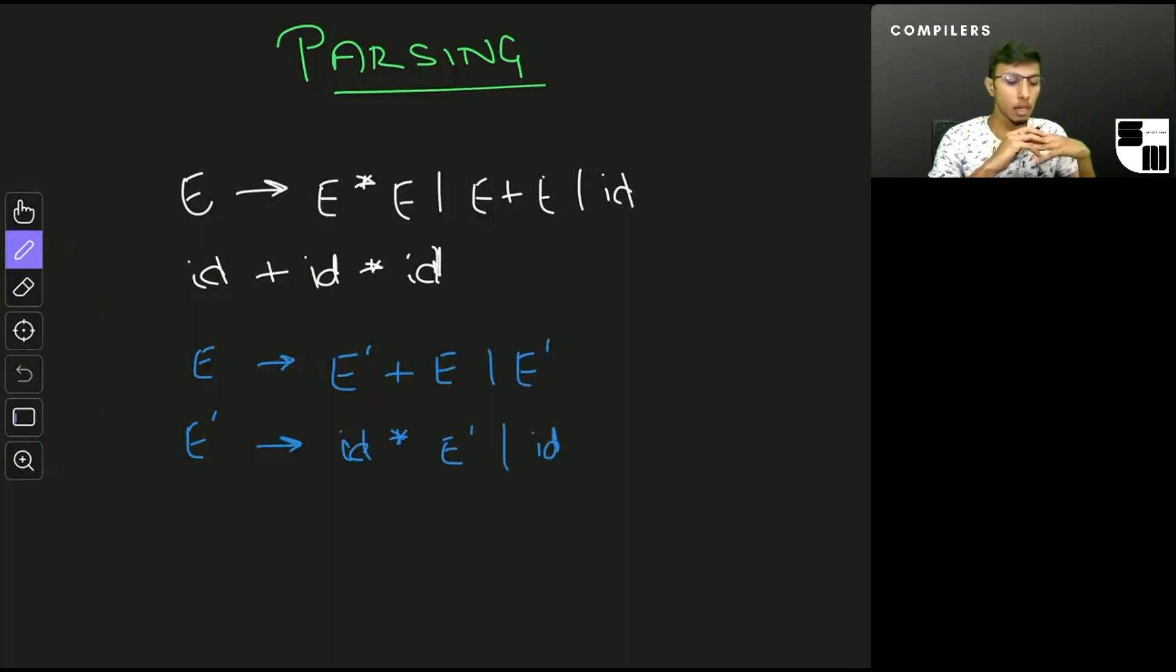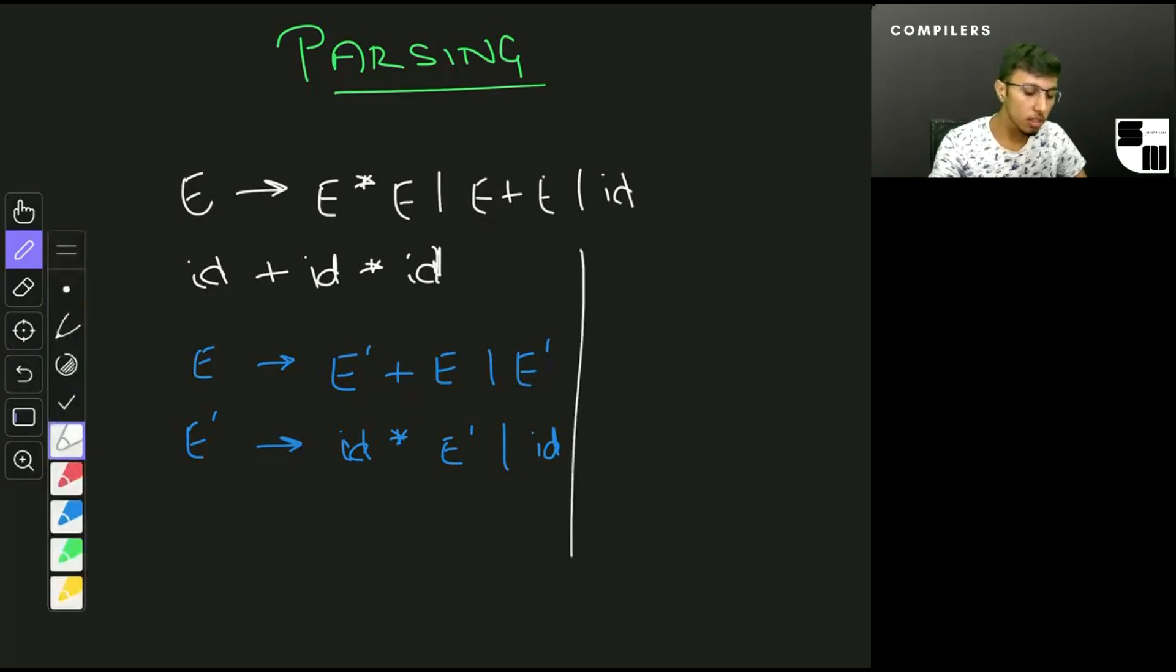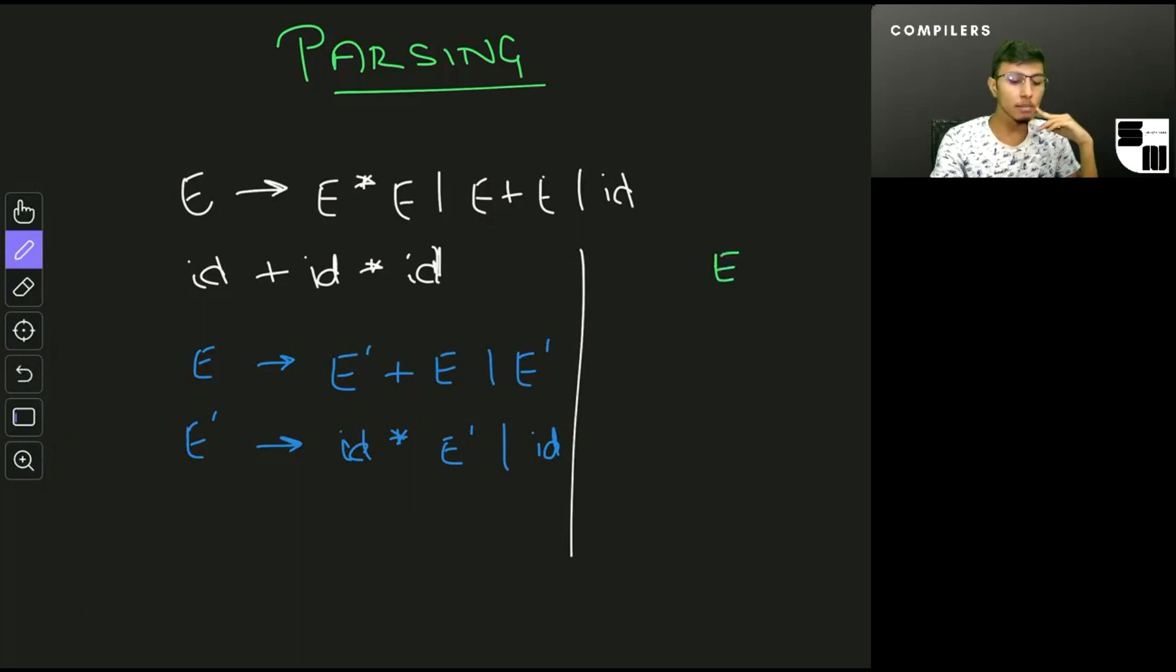Consider the string that we have, which is id plus id times id. I'm going to start with E, and this time I don't have an option of using the multiplication first. The only option I have is to use this one to introduce the plus, so I write E goes to E' plus E.